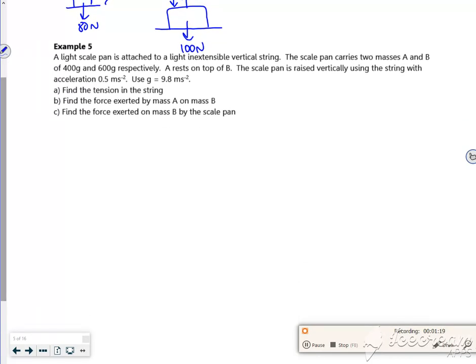Right, so there's another question here. It says a light scale pan is attached to a light inextensible vertical string, so you've got a scale pan that carries two masses. So A rests on top of B, it's a similar idea to this.